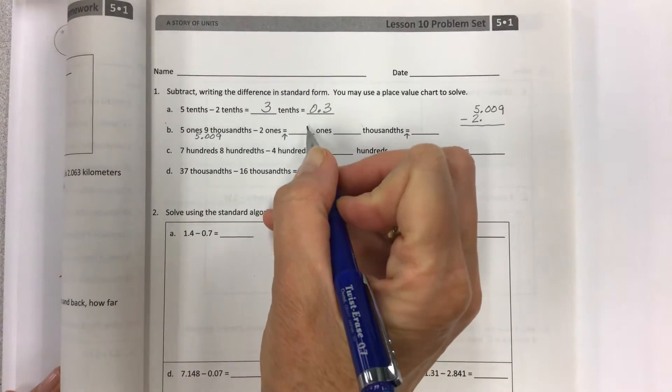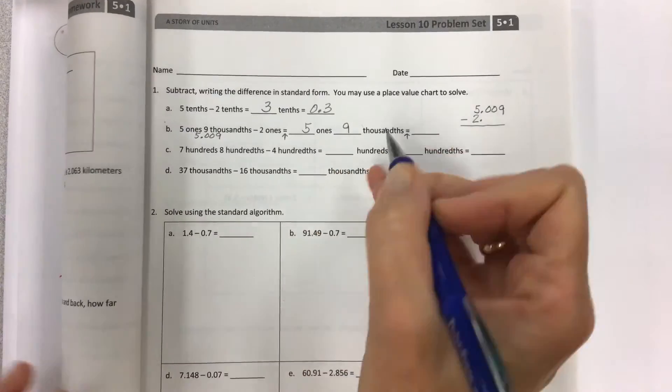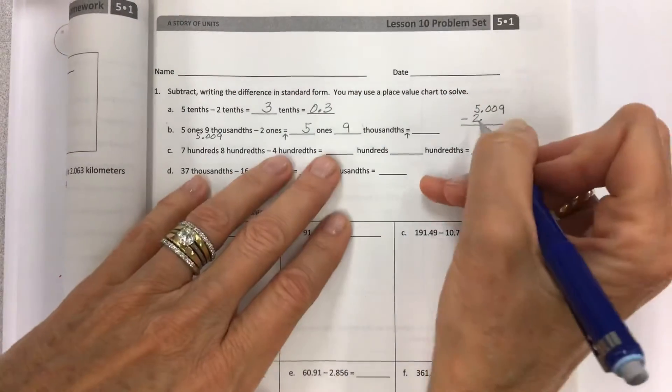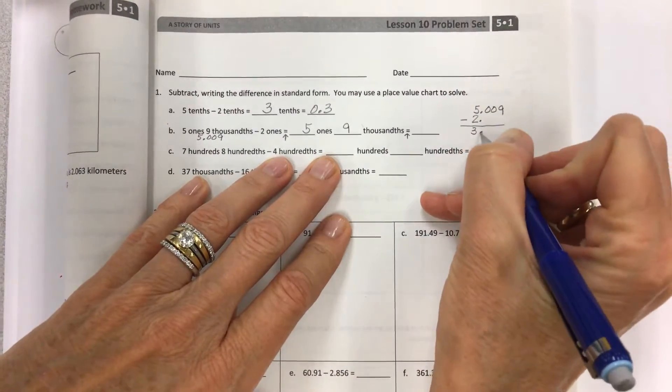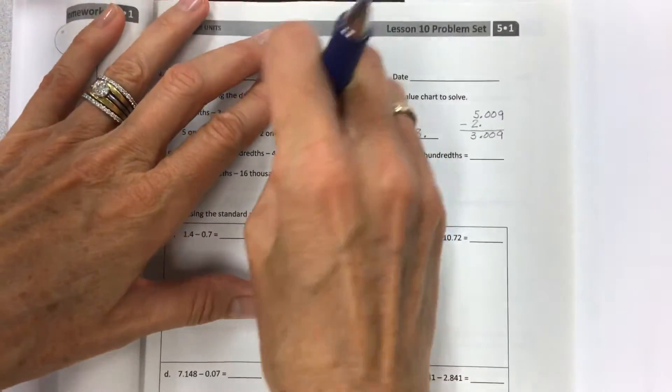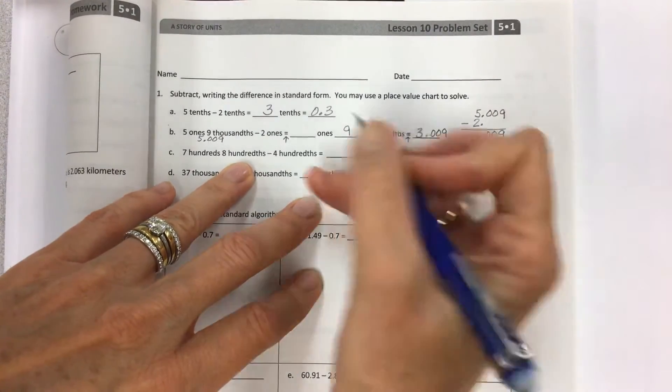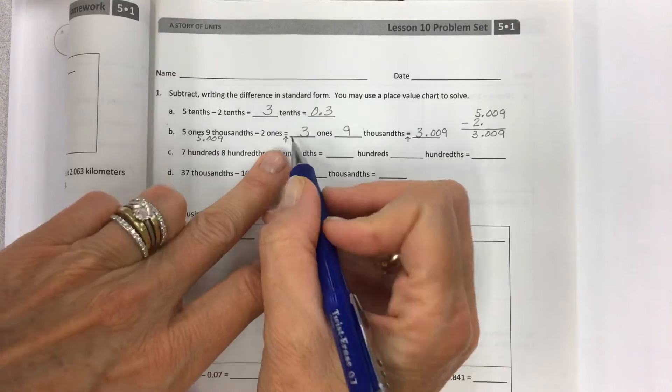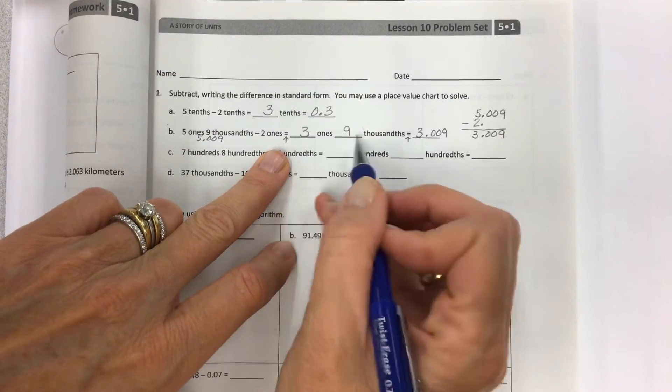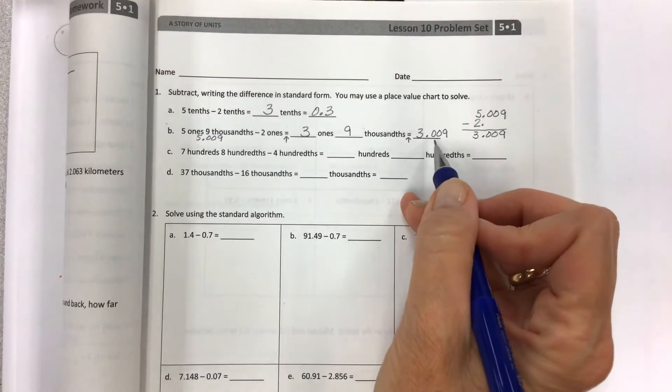There are 5 ones and 9 thousandths, and then you subtract, and you get 3 ones and 9 thousandths, and that's our answer because we're going to solve for it, but we have to break it up in unit form before standard form.